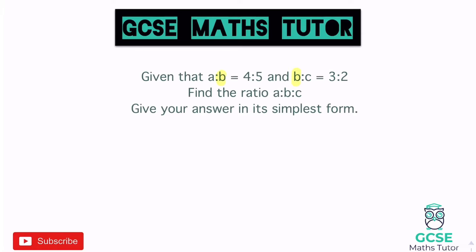In that first ratio A to B, I'm going to highlight the B, because in the next one B to C we've also got a B. Now in those ratios, the B is represented by the five in the first and by the three in the second one. As you can see, both those numbers are different. Now if they were the same we could just combine this straight away. If I write the ratio A to B to C — at the moment we've got four to five, so I'll put that underneath A and B.